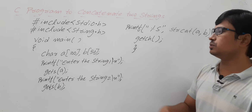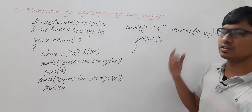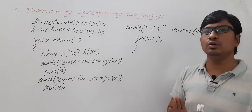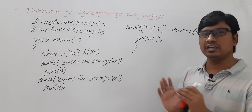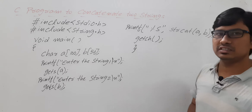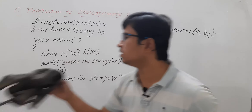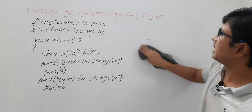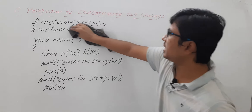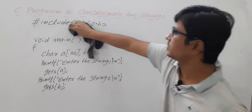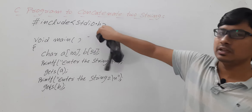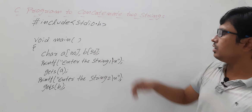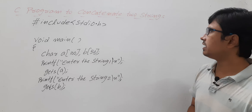Write getch() and close the main function. I hope you have understood how to concatenate two strings using the strcat function. Now the same program I want to write without using any string handling function. If you don't want to use strcat, you don't need to include string.h either. Whenever you are using any string handling function, only then do you need to include the string.h header file. Let me now discuss the logic behind this, then I will write the program.